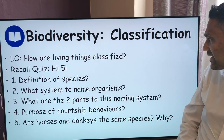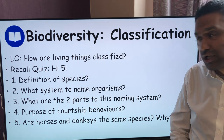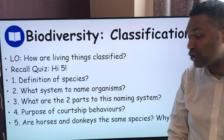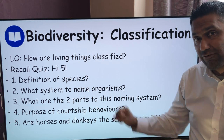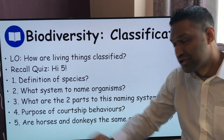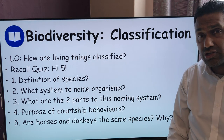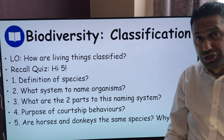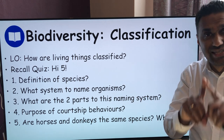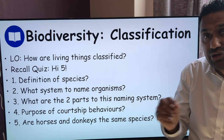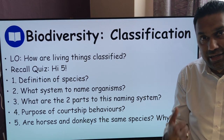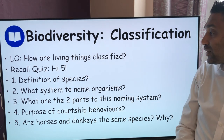Are horses and donkeys the same species? The answer is no. The horse had 64 chromosomes and the donkey had 62 — that's their diploid number. The horse would have 32 chromosomes in its gametes, the donkey 31. If you've got 32 and 31, they can fuse, but you end up with 63, which can't be halved to make a haploid number again. So if you get a horse and donkey together you get a mule, and a mule is infertile.